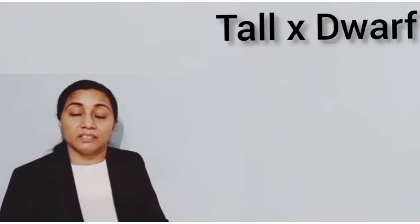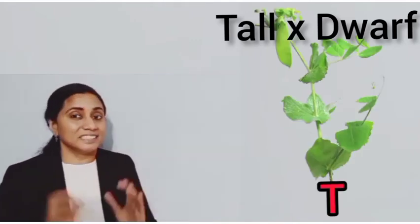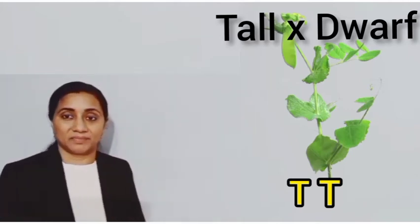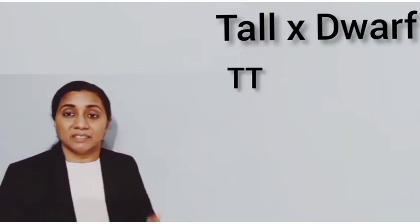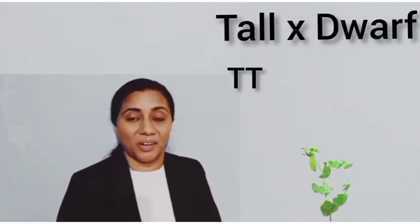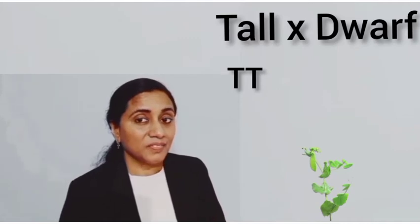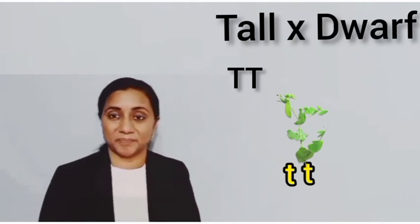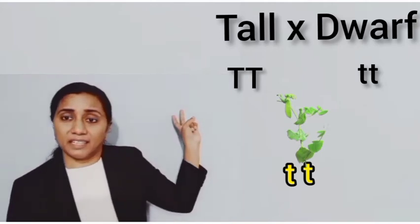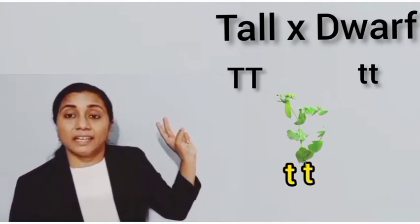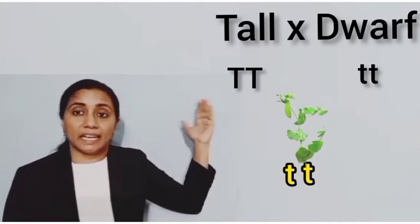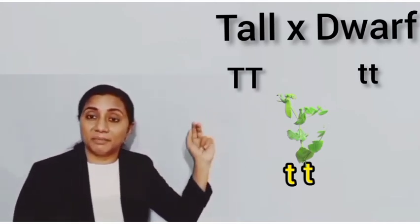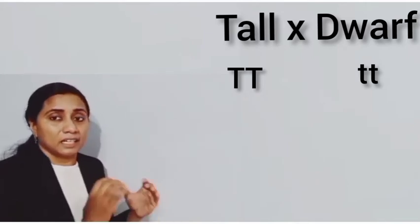In the case of tall and dwarf, which letter do we select? That is T. For the tall plant, we write capital T and capital T. For the dwarf plant, we take the small letter — small t and small t. Each character needs one factor from the father and one from the mother, so we write TT or tt.